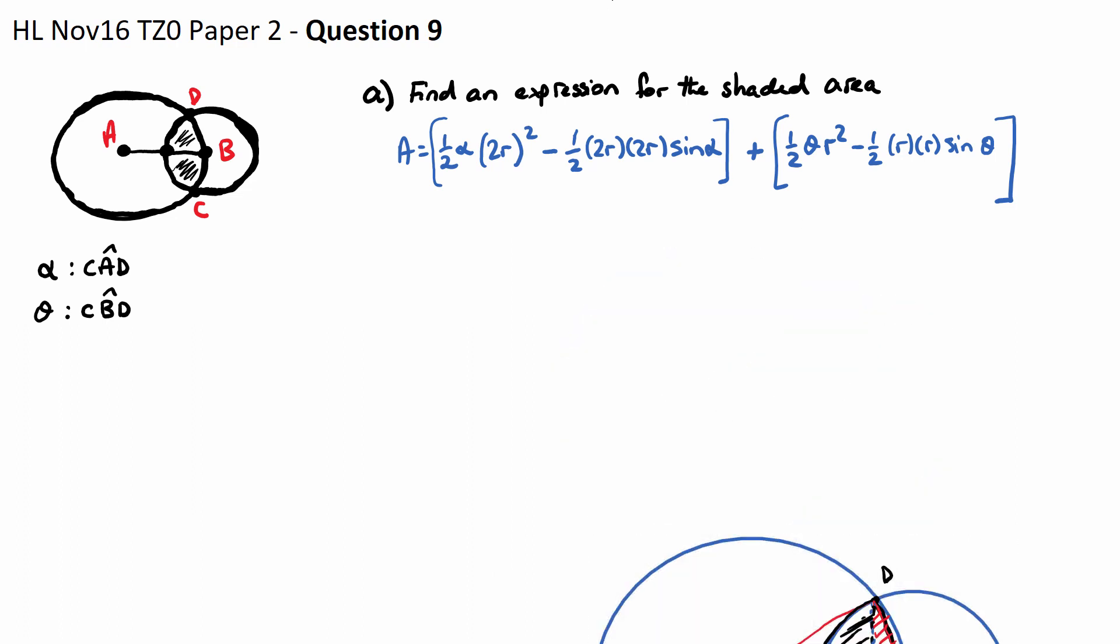Okay, so going back to our question, our area - there are some things that are in common here. A half times 2r squared will be 4r squared over 2, so this will be 2r squared. That can be factored out and it'll just be 2r squared times alpha minus sine alpha, plus - the same thing's going to happen here - a half r squared times theta minus sine theta. Okay, a long way to get there, but that is the answer to part a.